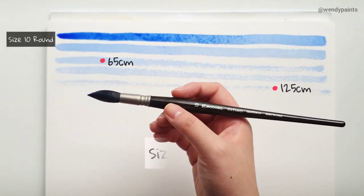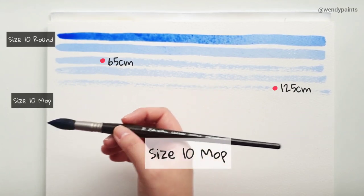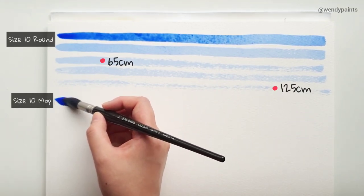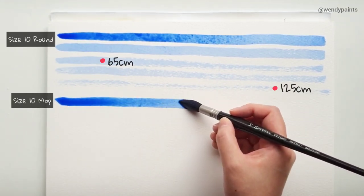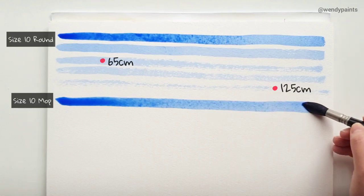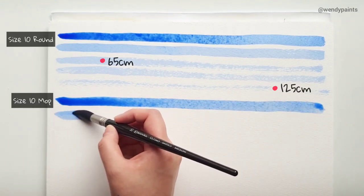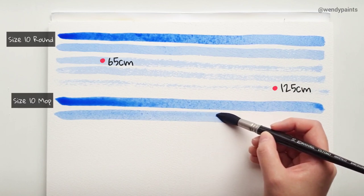So next we have the size 10 mop brush. Now this is the smallest mop brush from Skoda Ultimo and what I'm about to say next is not really the purpose of this video but I'm going to say it anyway because I just can't help but notice.